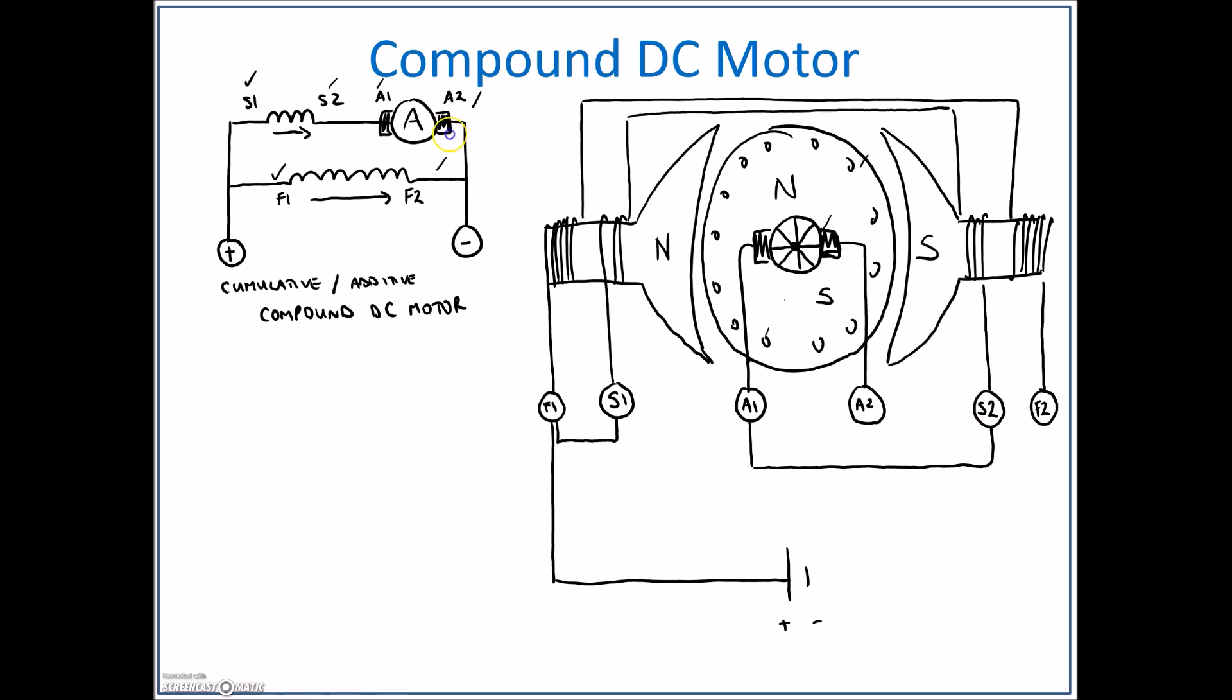And then A2 and F2 both reference the same polarity, and then we just need to bring our source polarity there. So I'm going to bring my other side of the source over to F2. So that corresponds from here to here, and I'm going to put a jumper over to my A2 connection. Beautiful. And that is all our connections for the cumulative compound DC motor.